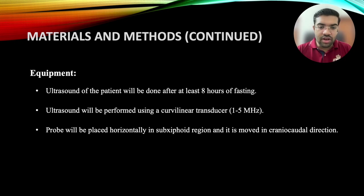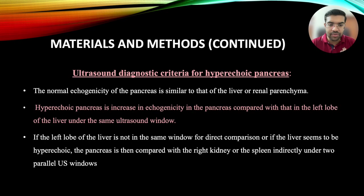The ultrasound was performed after 8 hours of fasting using a curvilinear transducer. The probe was placed horizontally in the sub-xiphoid region and moved in the craniocaudal direction. Normal echogenicity of the pancreas should be similar to that of the liver or renal parenchyma. Hyperechoic pancreas is defined as increased echogenicity compared with the left lobe of the liver under the same ultrasound window. If the left lobe is not visible in the same window or if the liver appears hyperechoic, the pancreas is compared indirectly with the right kidney or spleen.